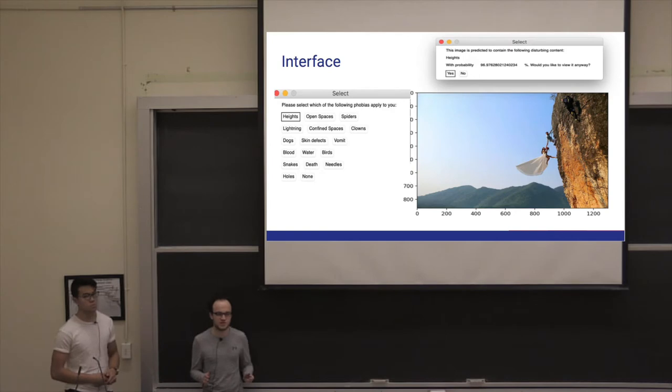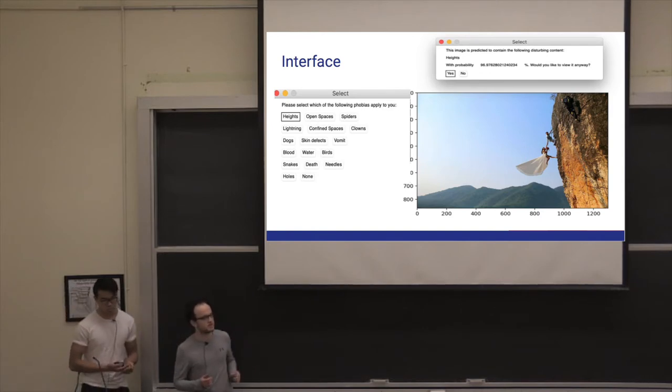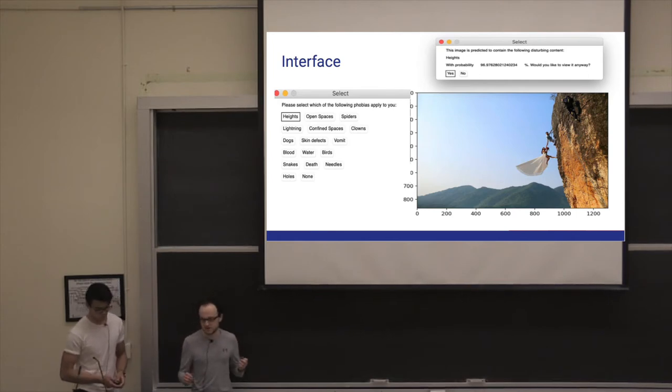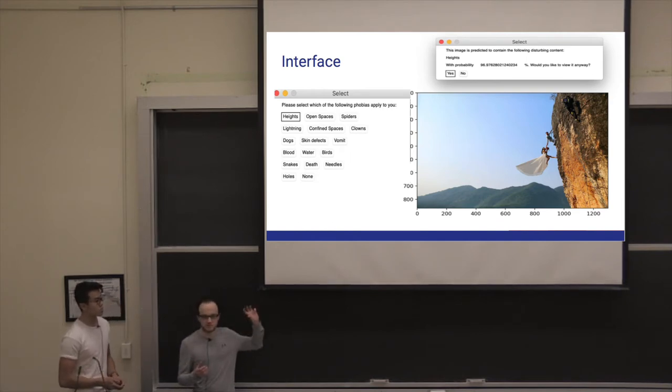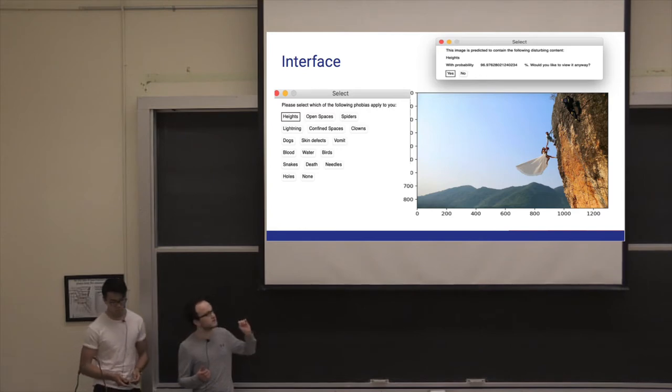Now somebody with one of these phobias will not necessarily have all the others, so in addition to making the classifier we've also made a graphical interface which allows people to select which types of phobic content they would like to filter for. We have a second interface which when phobic content has been detected in a photo, it warns the user, gives them the phobia in question and the confidence of the detection, and also gives them the option to show the image anyway if they would like.